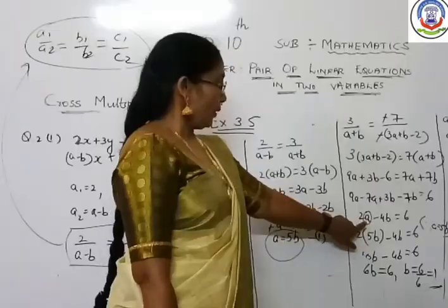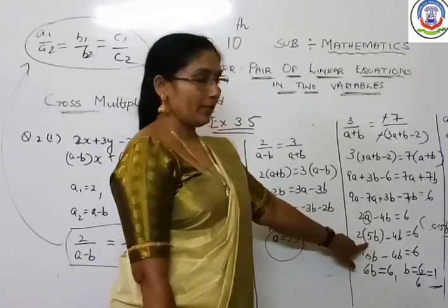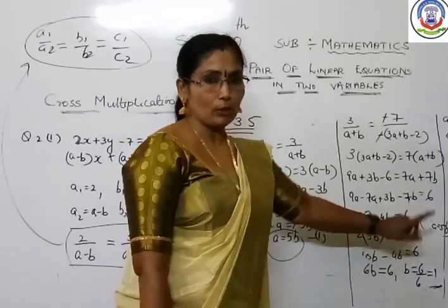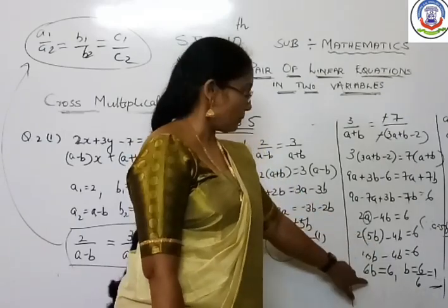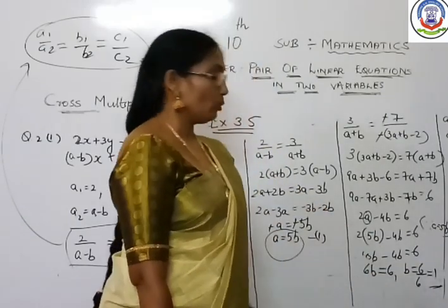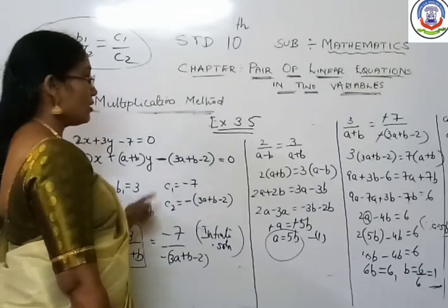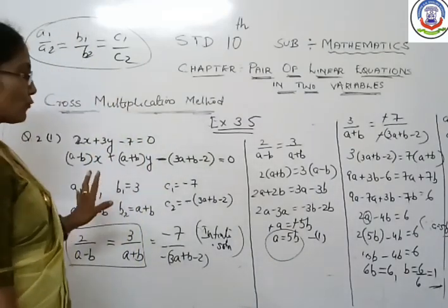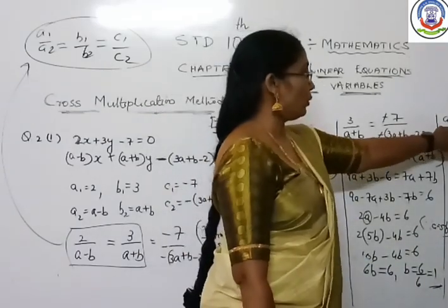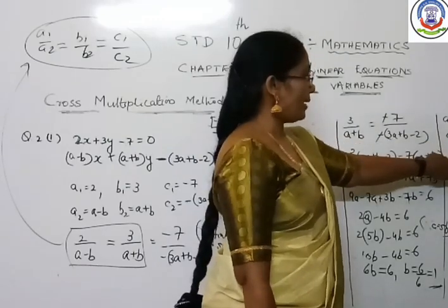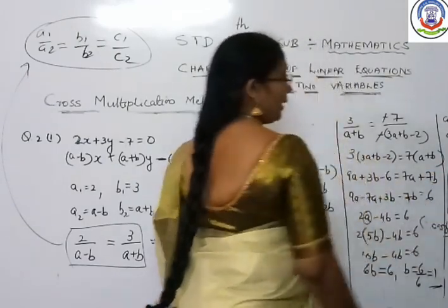Now substitute a = 5b into 2a − 4b = 6: 2(5b) − 4b = 6, so 10b − 4b = 6, giving 6b = 6, therefore b = 1. Now substituting b = 1 back: a = 5 × 1 = 5. So a = 5 and b = 1 are the values that satisfy the equation for infinite solutions.